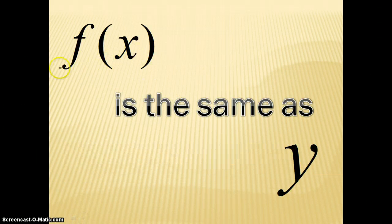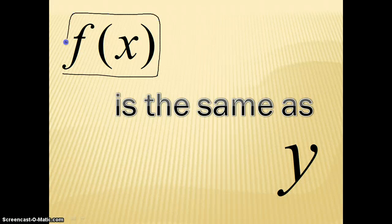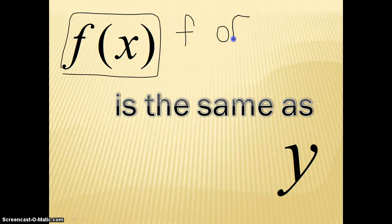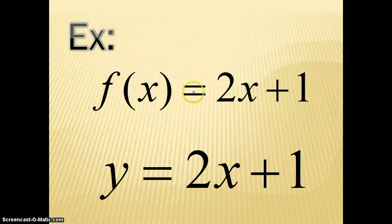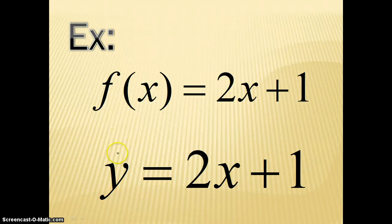Function notation is f of x. This right here is my function notation. The way we say that is f of x. And it is the same thing as y. So, for example, if I have f of x equals 2x plus 1, it's the same thing as saying y equals 2x plus 1. So remember, f of x and y are the exact same.